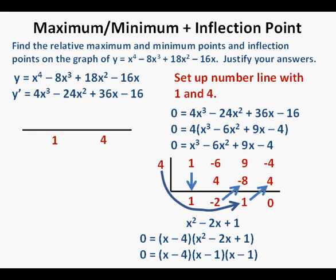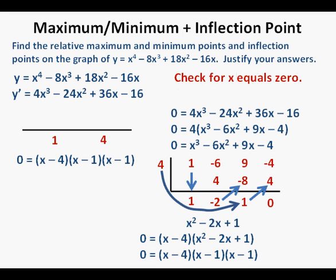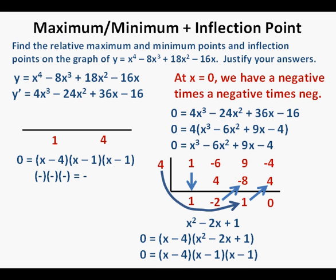Since our zeros are x equals 1 and x equals 4, we set up a number line as an organizing tool to check the signs of the first derivative on all sides of the critical numbers. The number line is set up with critical numbers 1 and 4 on it. First, we check to the left of 1, using x equals 0 — we're just checking for the sign. With x equals 0 we have a negative times a negative times a negative, which equals a negative, so we place a negative sign to the left of 1 and a down arrow below the number line. Then trying a number between the critical numbers — using x equals 2 — we have a positive times a positive times a negative, which equals a negative.